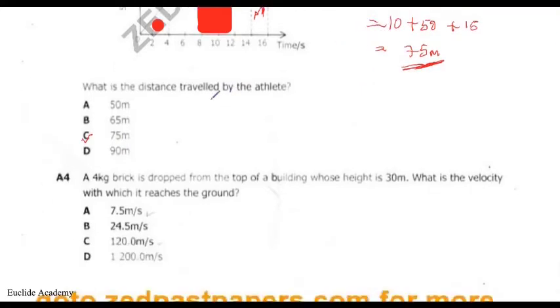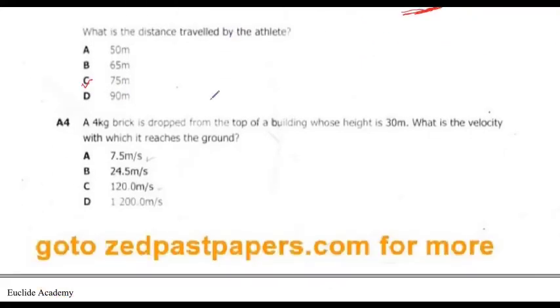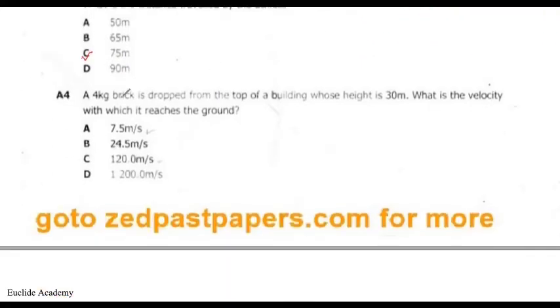Question four: a four-kilogram brick is dropped from the top of a building whose height is 30 metres. What is the velocity with which it reaches the ground?